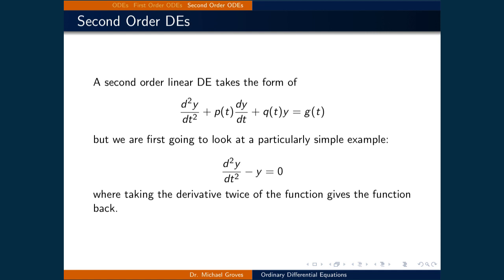Now that we've looked at first-order differential equations, let's see what a second-order differential equation looks like. A second-order linear differential equation takes the form of the first equation listed in the slide, where the second derivative of y with respect to t plus p(t) times dy/dt plus q(t) times y is equal to g(t). p(t), q(t), and g(t) are all polynomial functions. For the purpose of this course, we're going to look at particular variations of this general form.